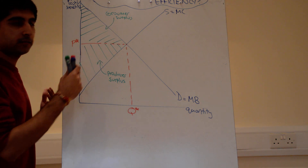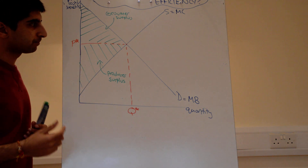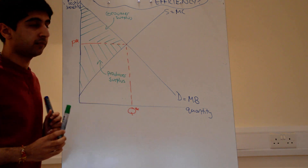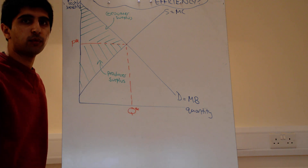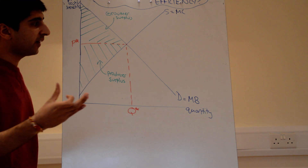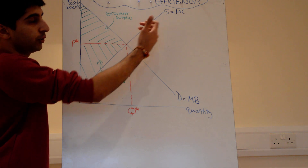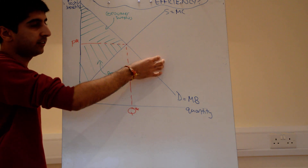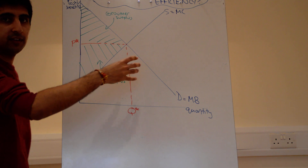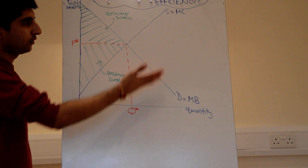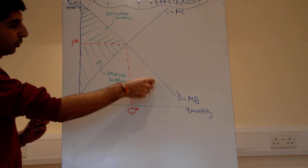Let's look at either side. Moving to the right of MC equals MB: any points to the right, the marginal cost of producing something is more than the marginal benefits derived. So utility is not being maximized — in fact, utility is falling. We're getting less utility each time by producing more units to the right. We're not allocating resources efficiently, because consumers are not benefiting; they're actually being harmed.